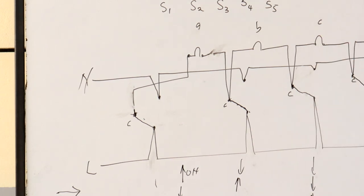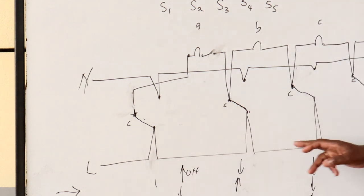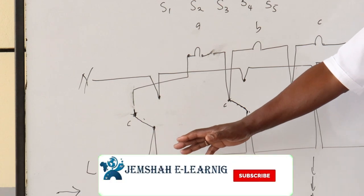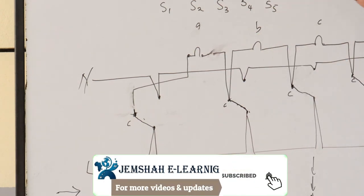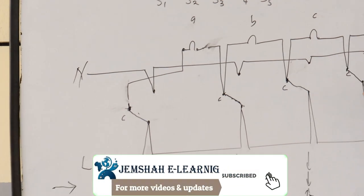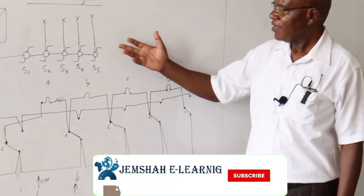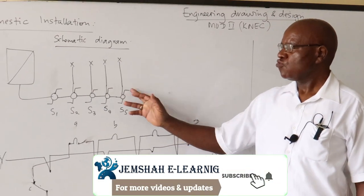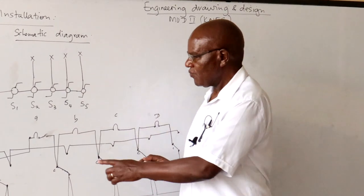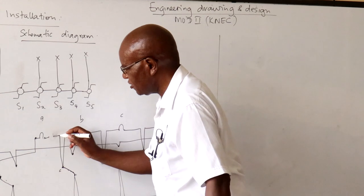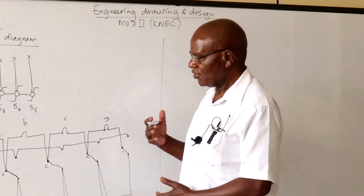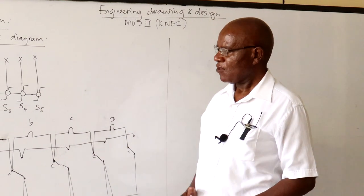The sequencing works when you are coming up, and also when going down. Many people can come up following one another and the sequence will work. However, the sequencing won't work if I start from one end and go to the other without following the switching sequence. The key thing is: if you understand how the accessories work, you can manipulate them to achieve what you want.